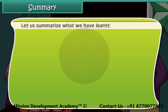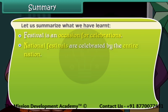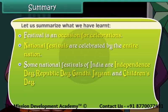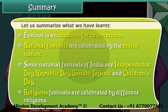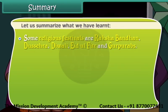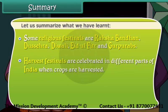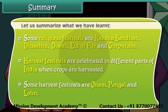Summary: A festival is an occasion for celebrations. National festivals are celebrated by the entire nation; some national festivals of India are Independence Day, Republic Day, Gandhi Jayanti, and Children's Day. Religious festivals are celebrated by different religions; some examples are Raksha Bandhan, Dussehra, Diwali, Eid ul-Fitr, and Guru Purabs. Harvest festivals are celebrated in different parts of India when crops are harvested; some harvest festivals are Onam, Pongal, and Lohri.